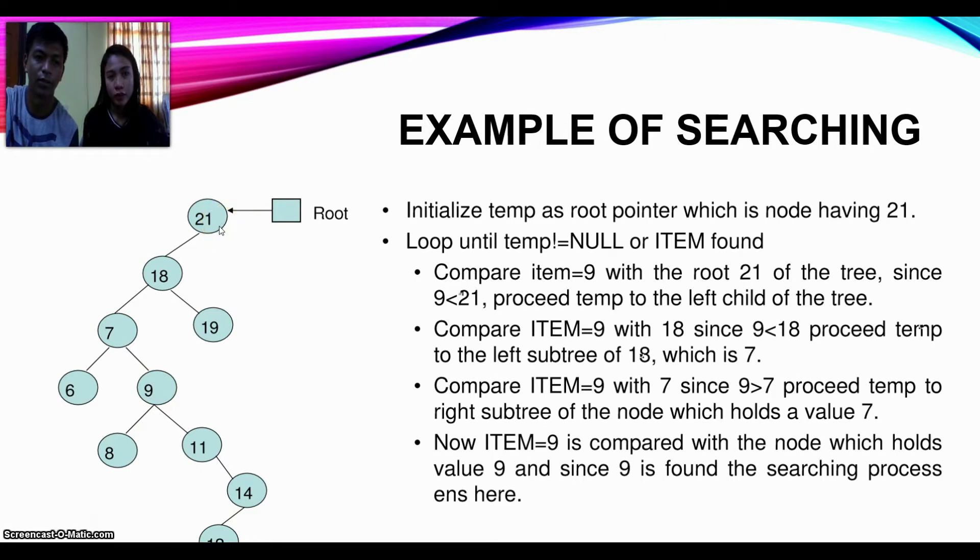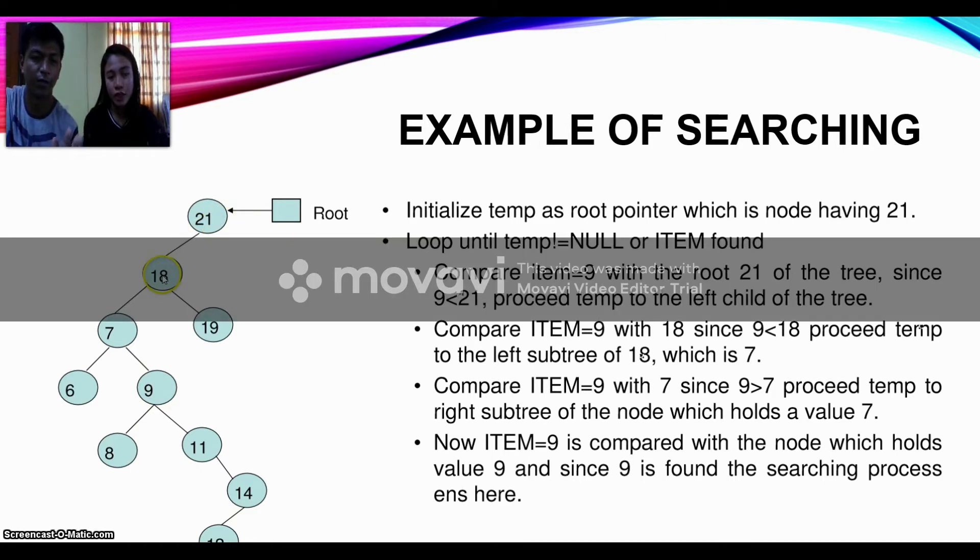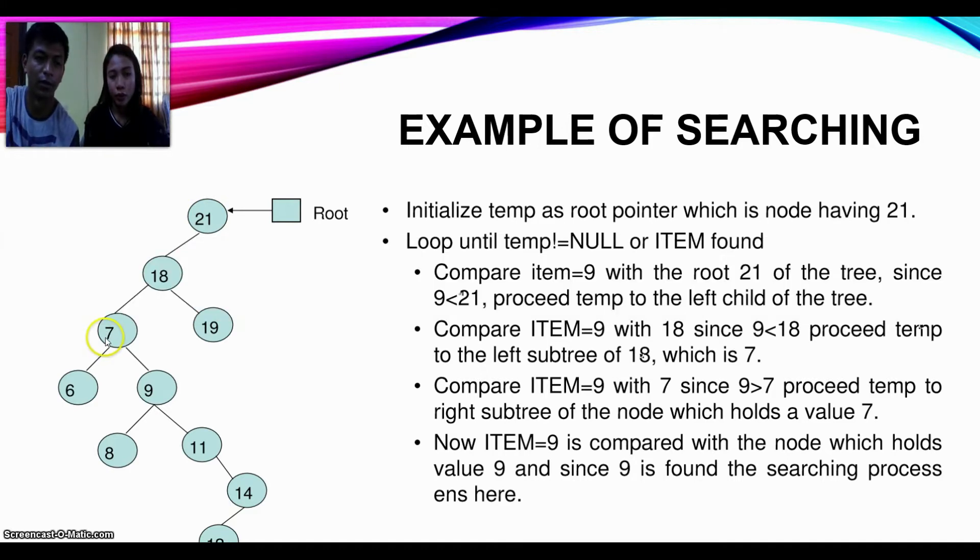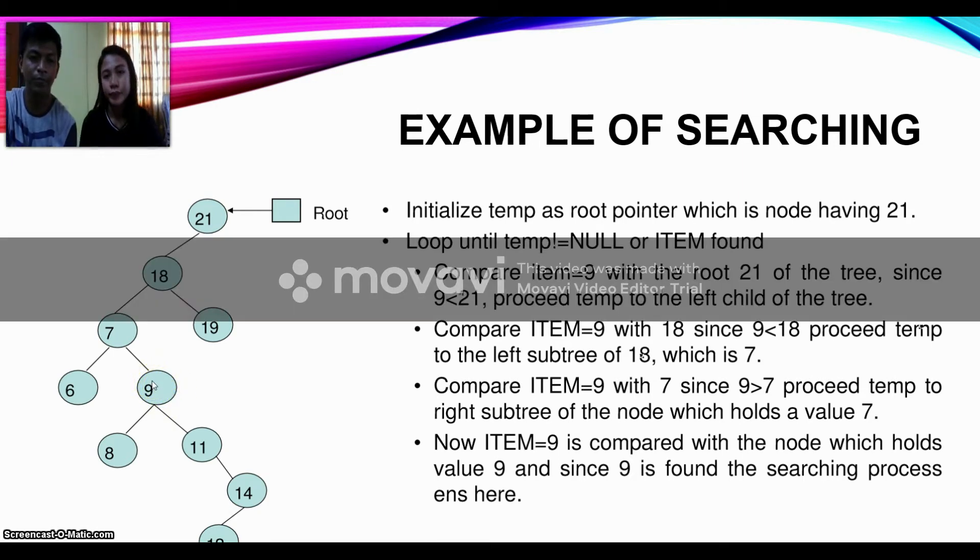Is 9 less than 18? Yes, so it goes to the left. Is 9 less than 7? No, it's greater, so it goes to the right side, which is the location of 9. That's how it searches in a binary tree.